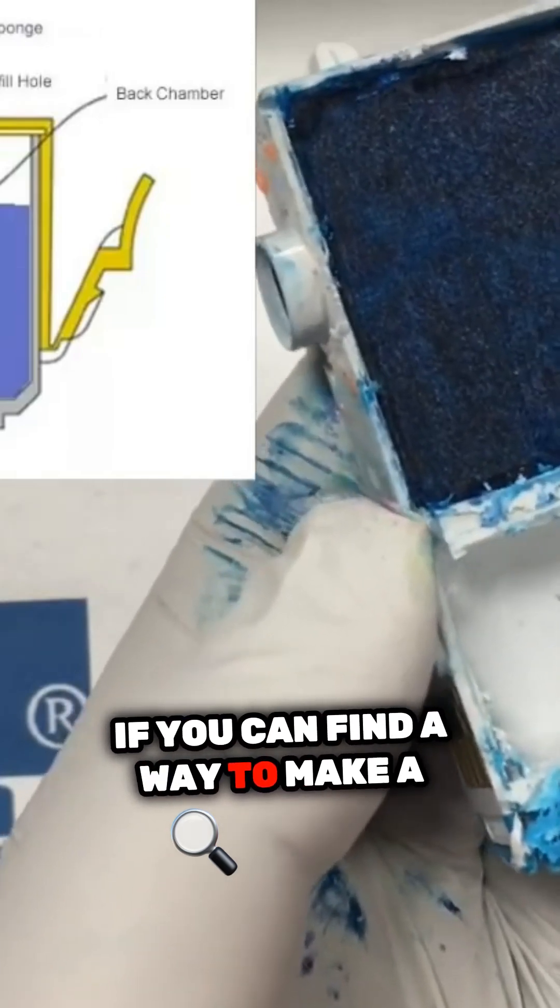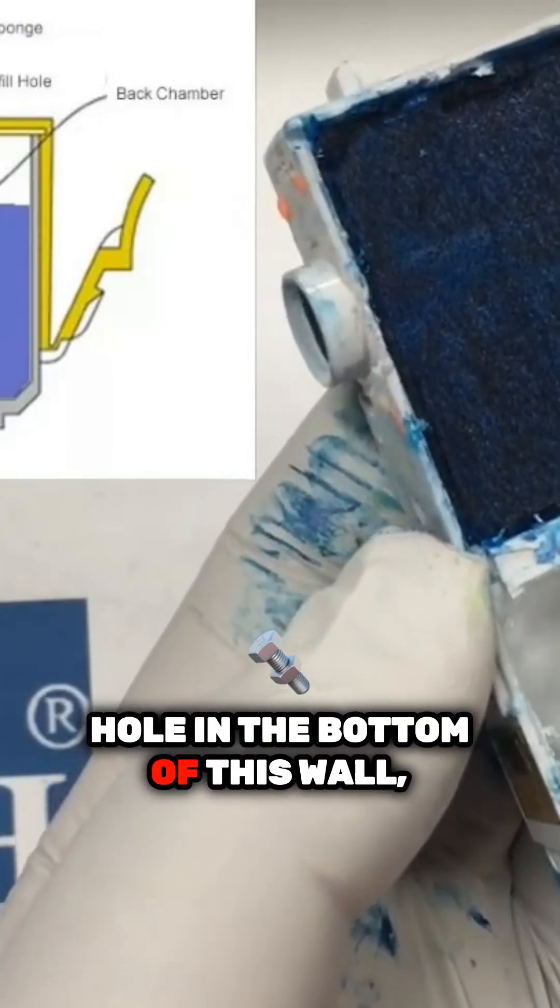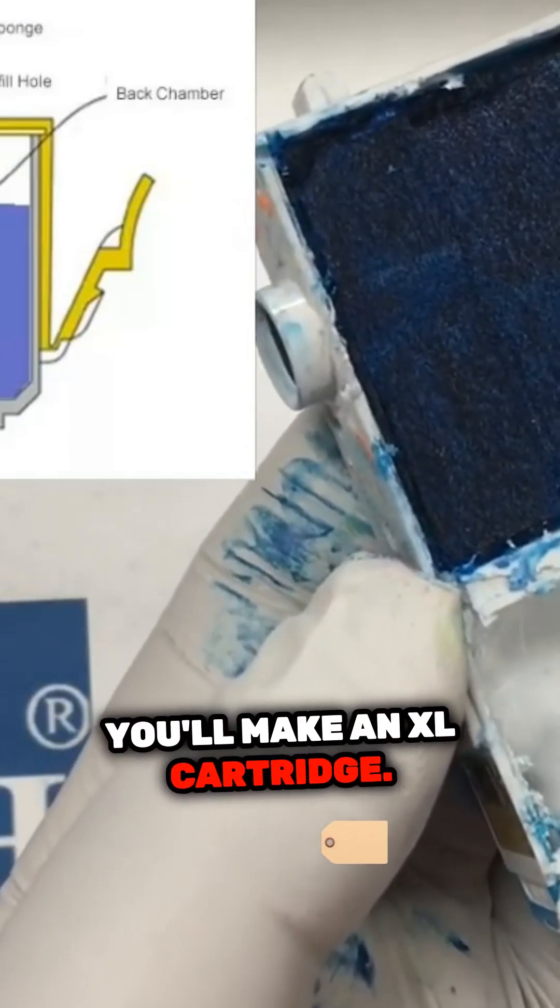If you can find a way to make a hole in the bottom of this wall, you'll make an XL cartridge.